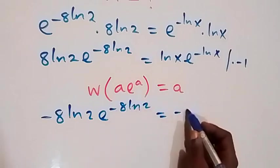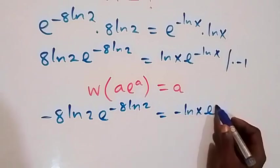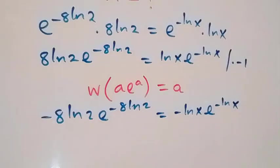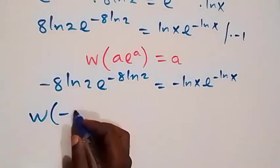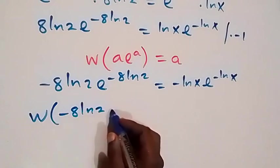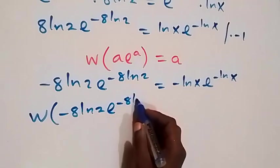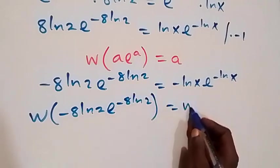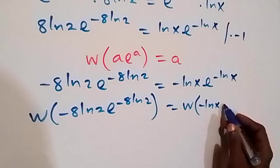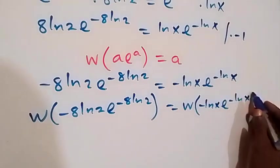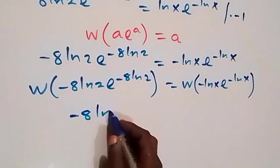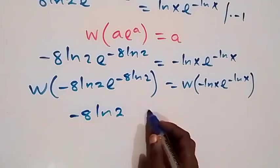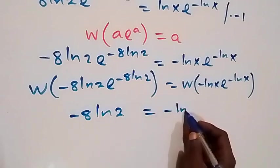Now equals to minus ln x times e raised to power minus ln x. Then when we apply the Lambert W function to both sides, we have W of minus 8 ln 2 times e raised to power minus 8 ln 2, equals to W of minus ln x times e raised to power minus ln x. This gives us minus 8 ln 2 equals to minus ln x.